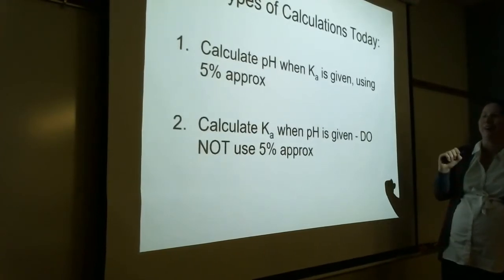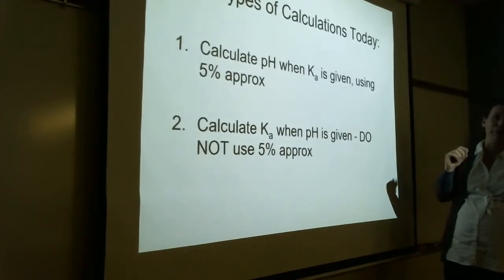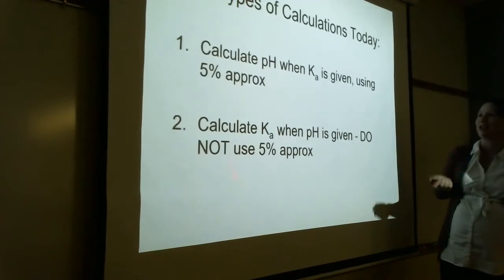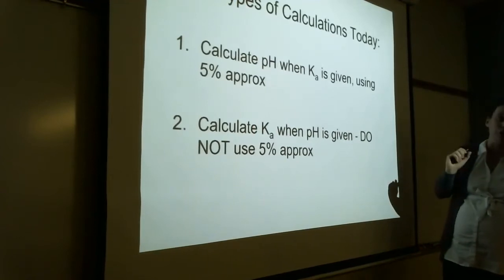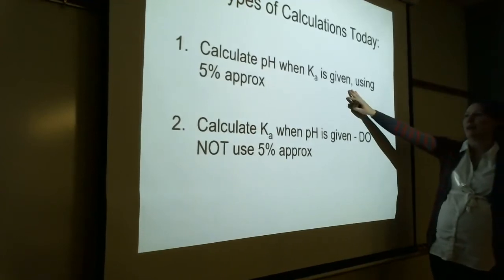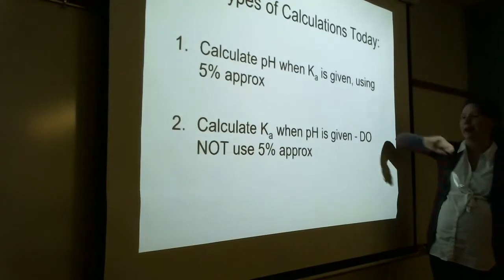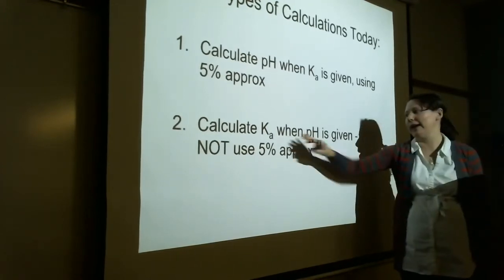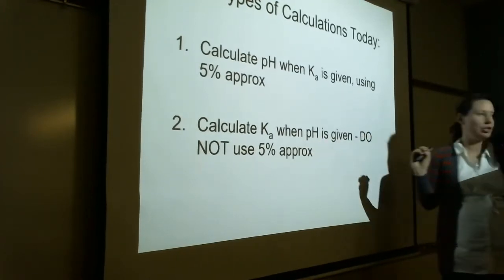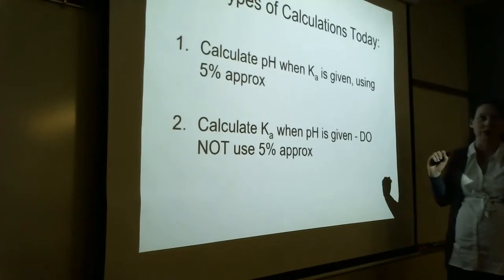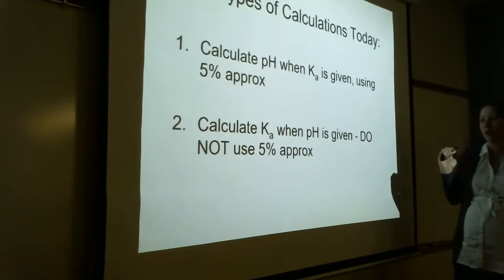There are not just two types of calculations — we're going to be doing like four types of calculations. But these are the two we're going to start with: calculating the pH from Ka, and then calculating the Ka from pH. And then we're going to do some percent dissociation calculations as well.